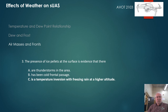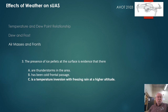A test question: the presence of ice pellets at the surface is evidence that there is a temperature inversion with freezing rain at a higher altitude. Ice pellets always indicate freezing rain at a higher altitude because the rain is falling and freezing as it descends.